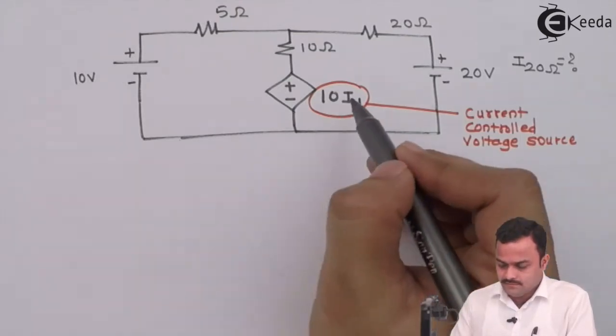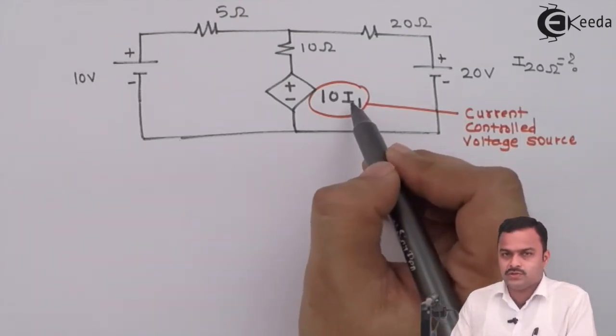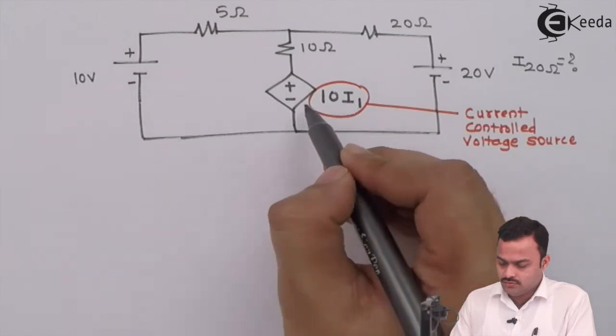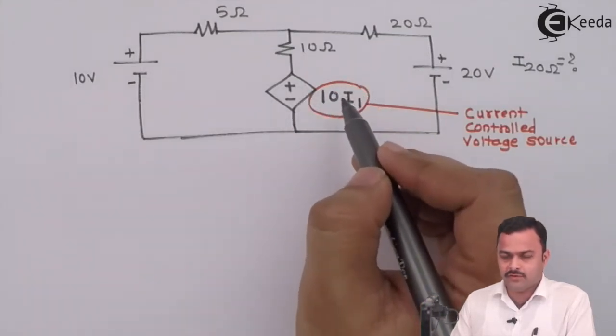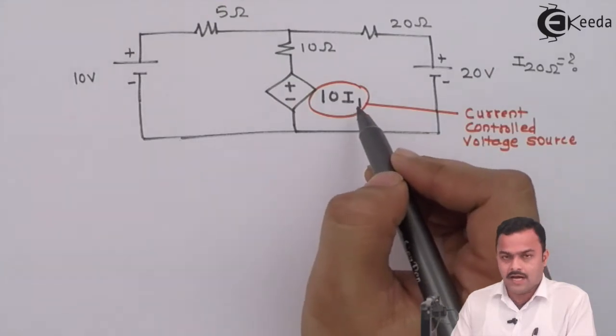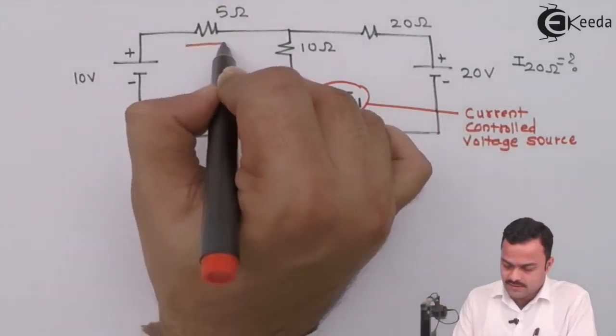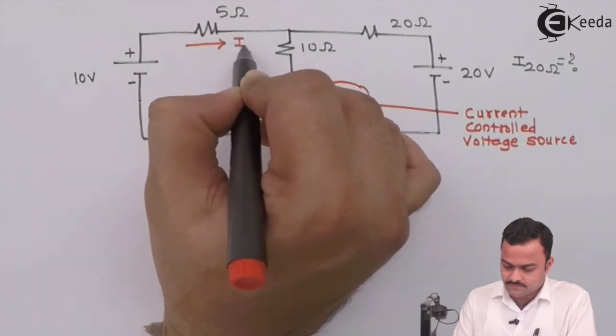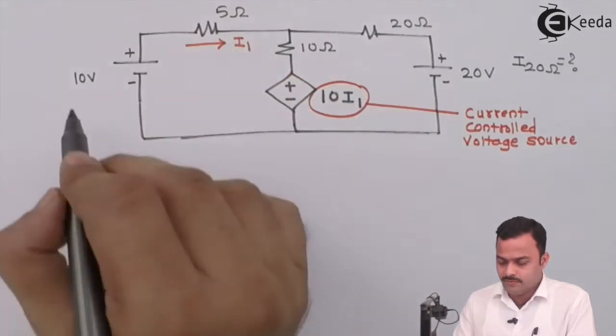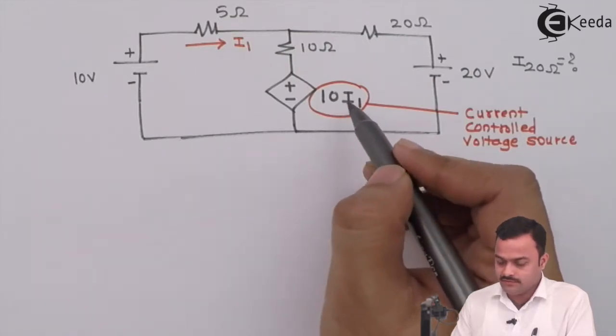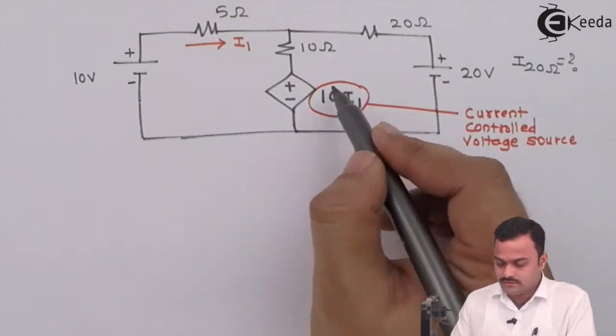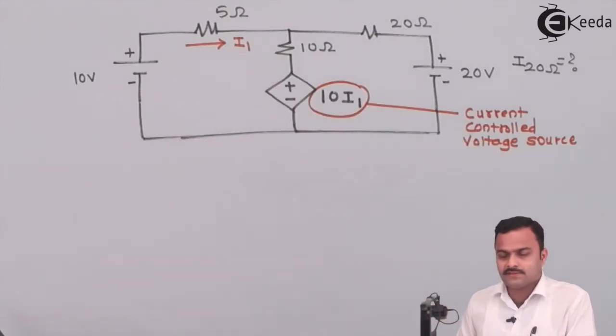The thing is that somewhere in the circuit we should have this current i1. So beside this 10i1, there has to be one more information given and that is i1. So let's consider this is that i1. So this will be a complete circuit where dependent source is given and it is also given on which value this source depends, that is i1. So in this case how to apply Kirchhoff's voltage law we will see now.